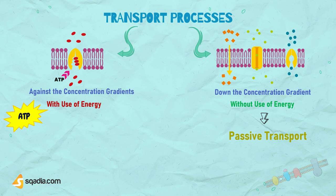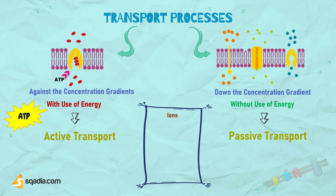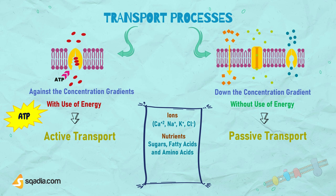These transport mechanisms across the cell membrane are essential to regulate the concentration of substances inside the cell. These substances include ions such as calcium, sodium, potassium, and chloride; nutrients including sugars, fatty acids, and amino acids; and waste products, particularly carbon dioxide, which must leave the cell.